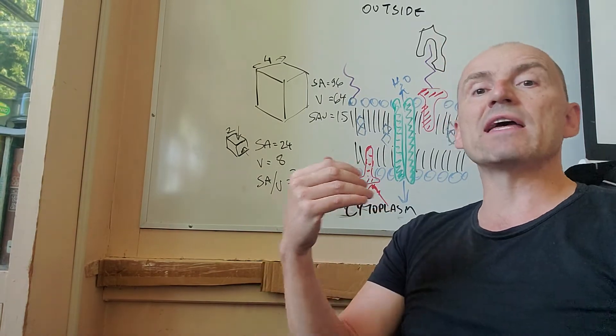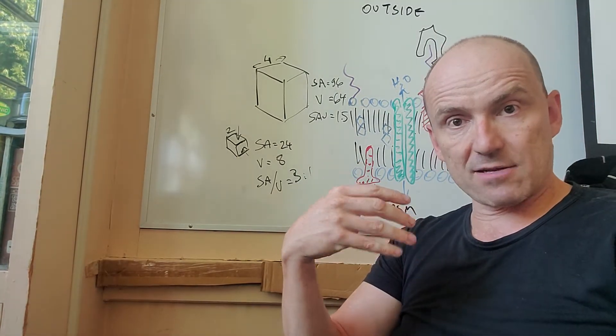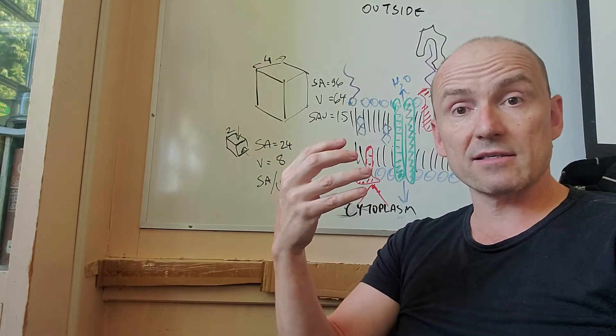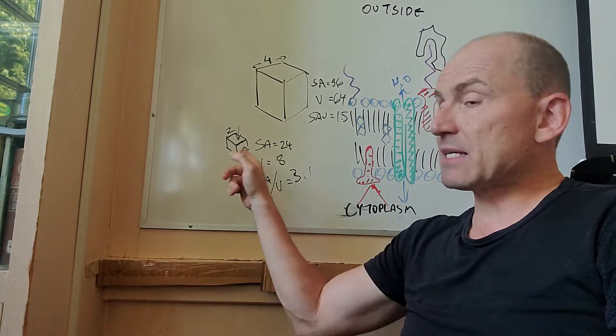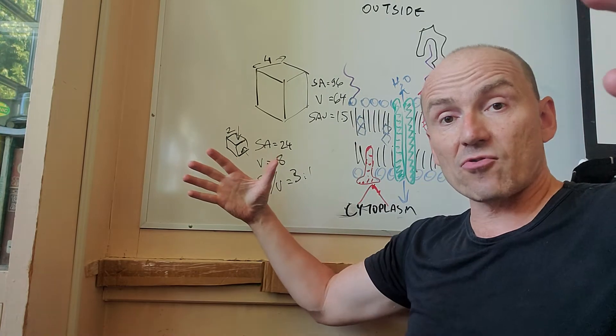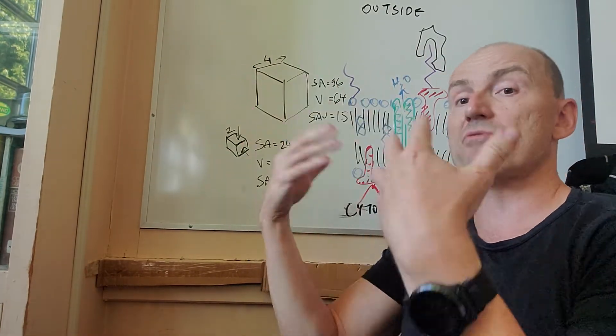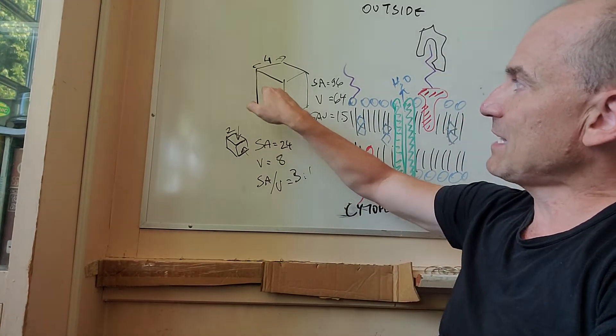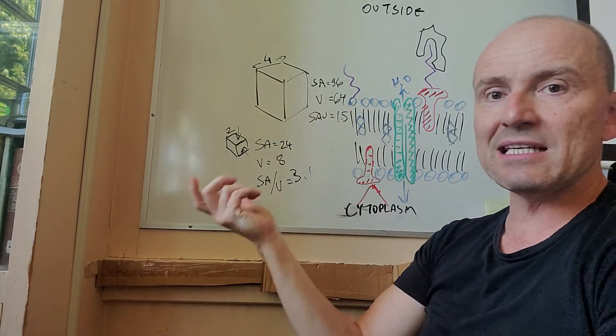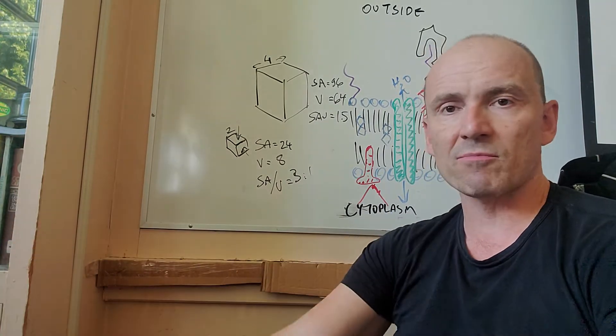So things can't move in. Not enough stuff can move in to be processed and not enough wastes can come out. So this is what limits the size of cells, because if a cell grows too big, there's just not enough surface area to bring in the materials for metabolism. The other problem is things have to get from the membrane to the interior. They have to diffuse or move to the interior.